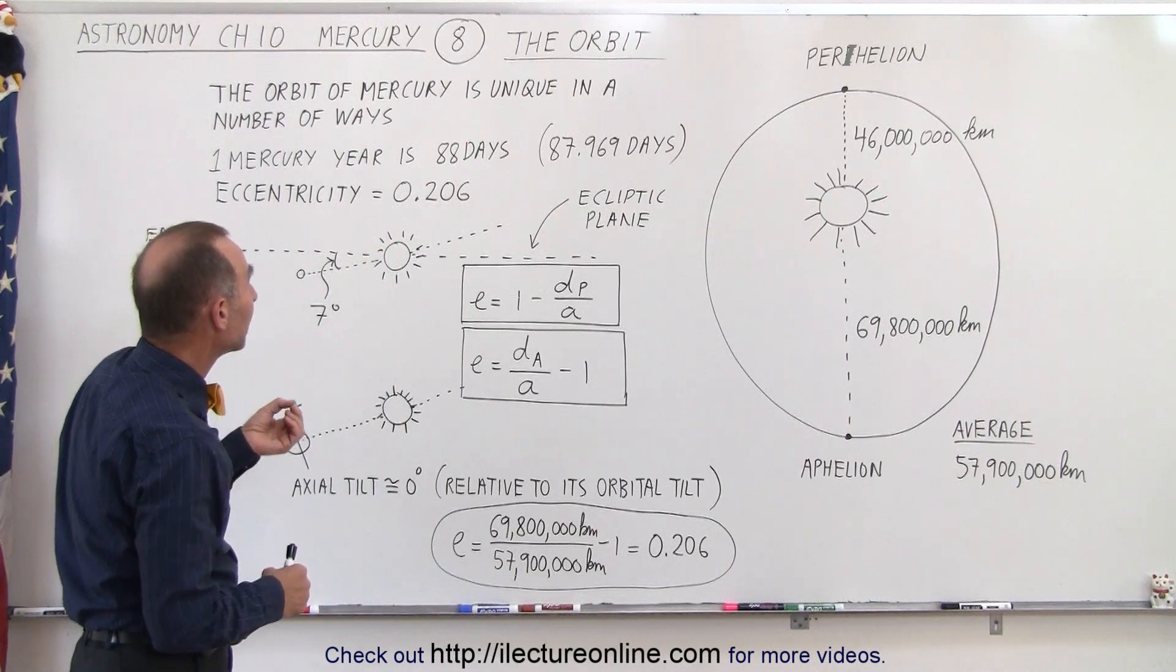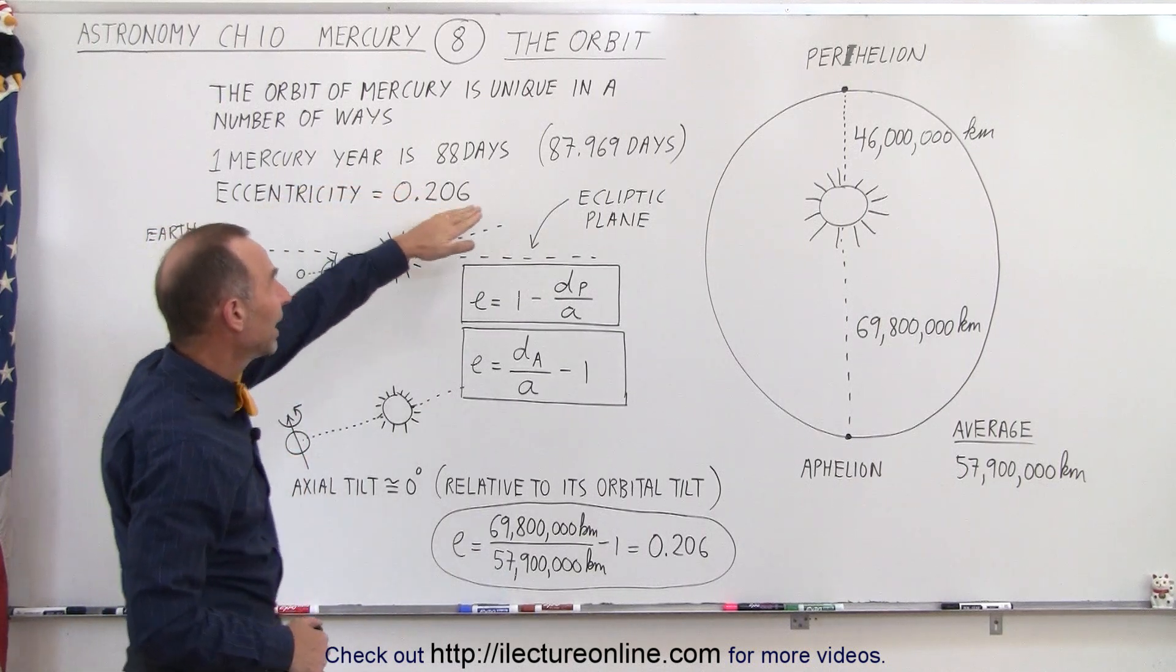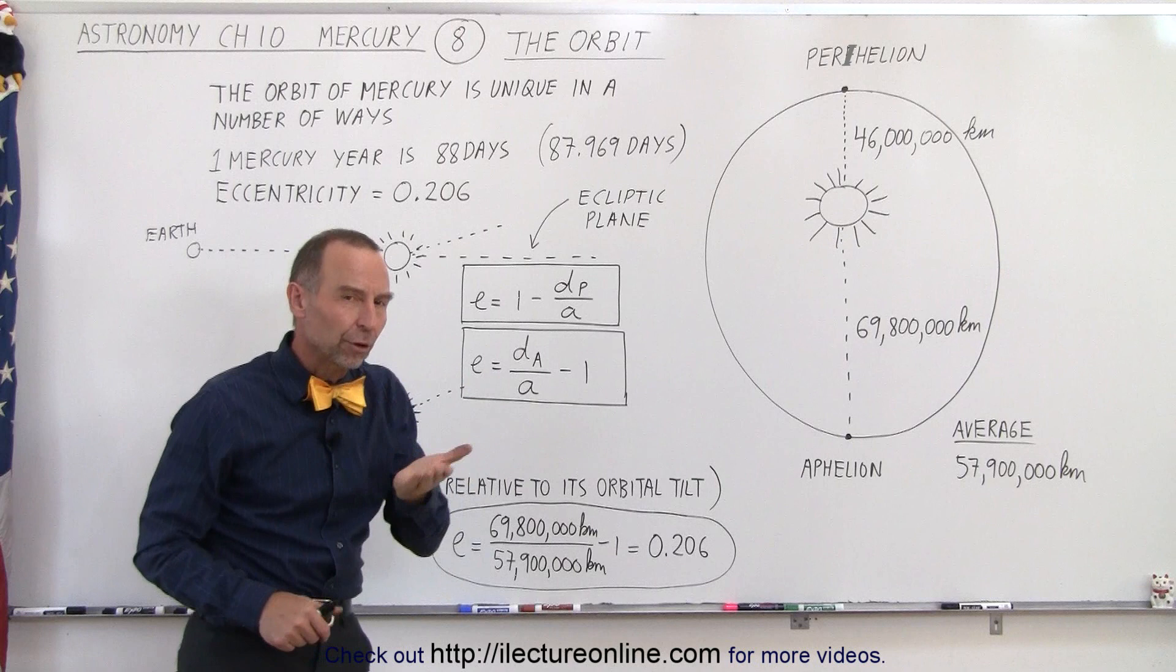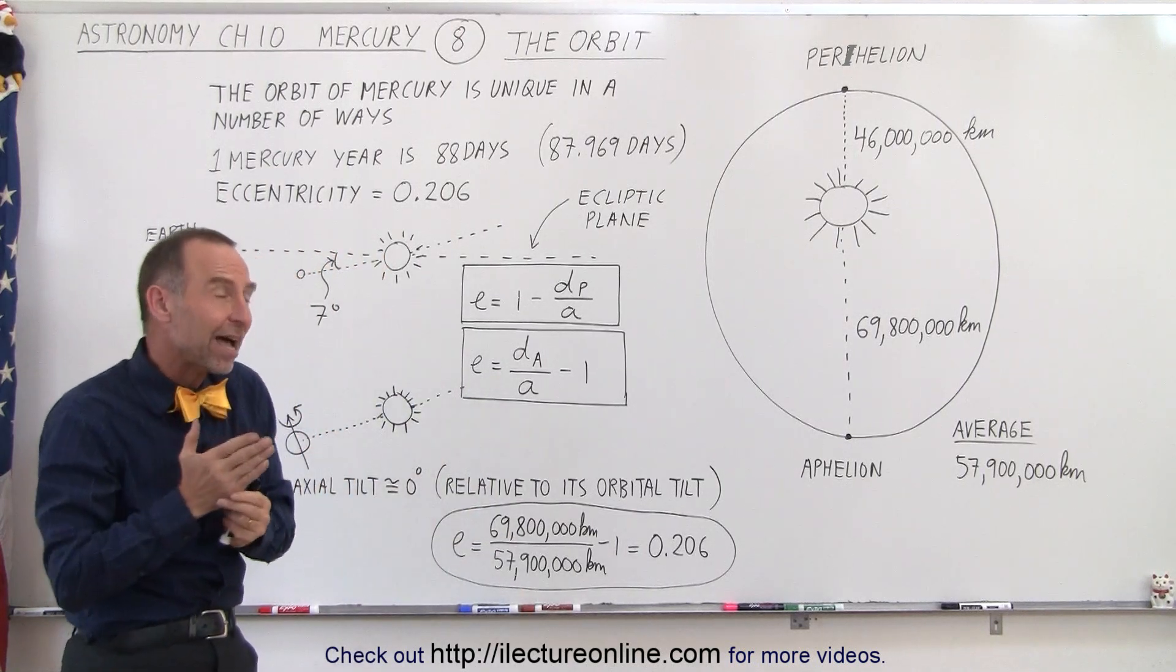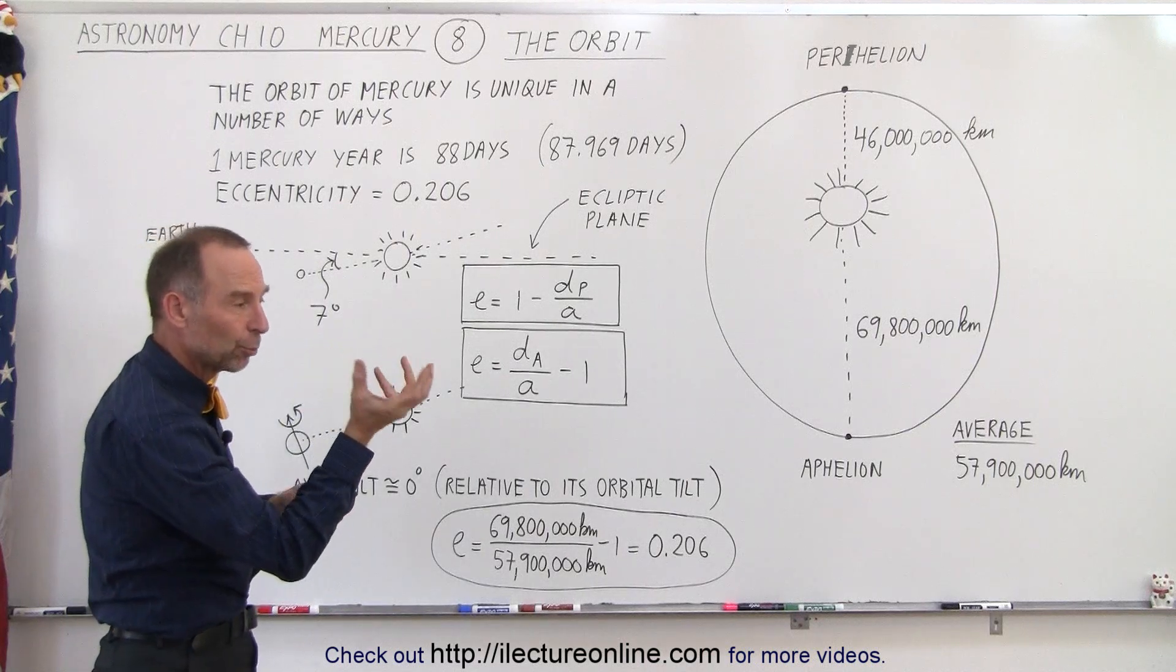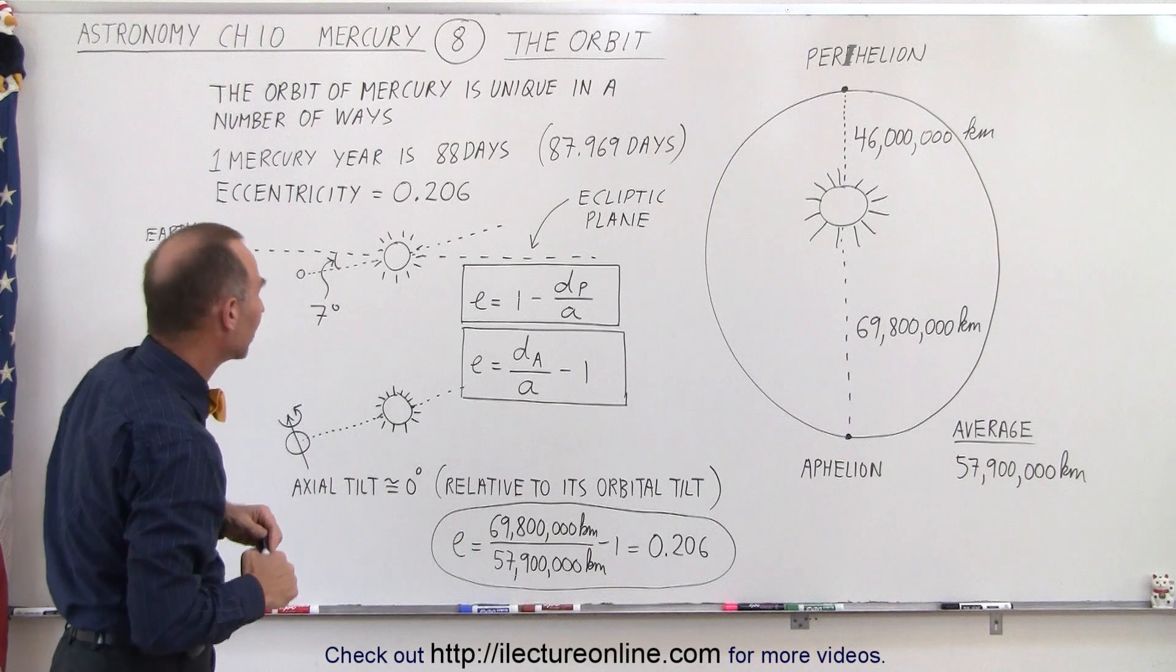What's also unique about the orbit is that it's only 88 days, in that the time it takes Mercury to go around the Sun is exactly one and a half times the amount of time it takes Mercury to rotate on its axis. And we'll talk a little bit about that in a later video as well.